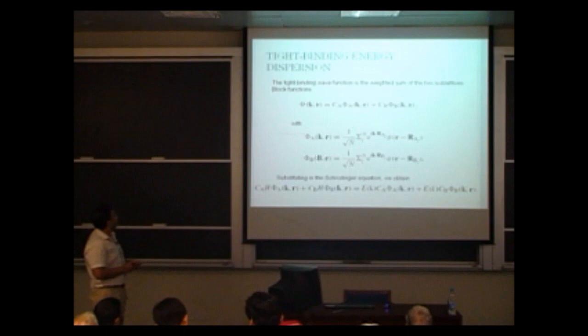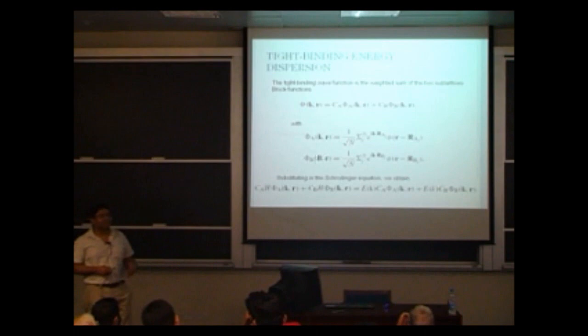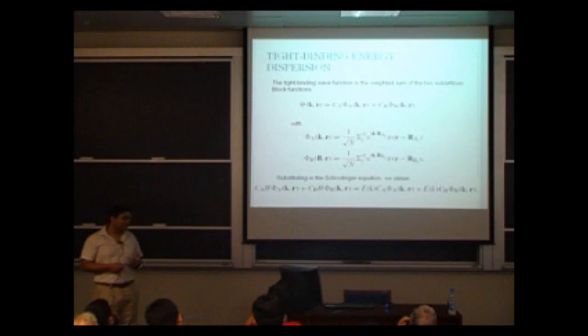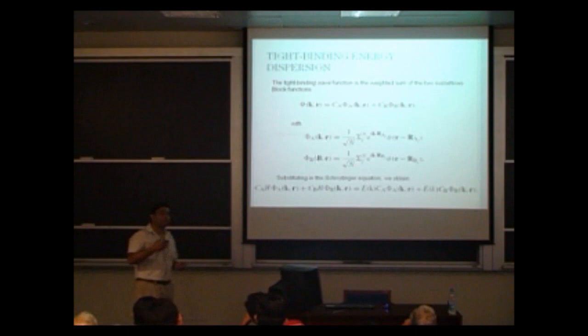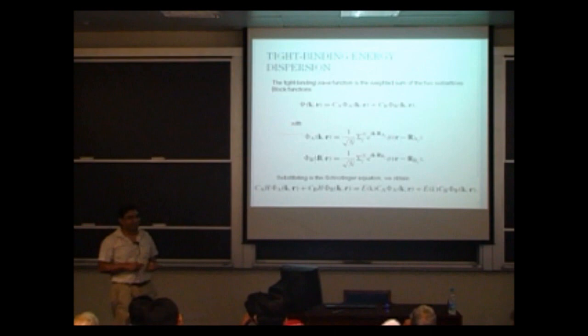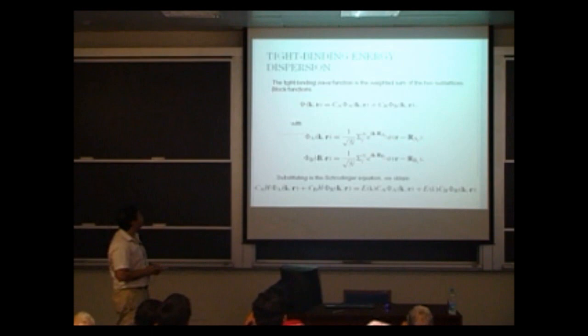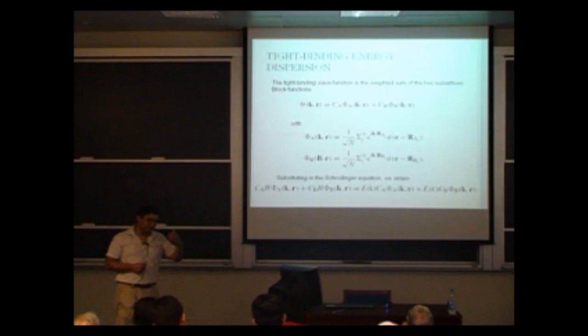Now we are going to do a tight binding calculation, as mentioned earlier. Tight binding was very successfully used to determine the energy dispersion relation in diamond, for example. On those grounds, people also did a tight binding calculation on graphene — actually it was done earlier for graphite, but results were built up on the basis of a single layer of graphene. The tight binding calculation considers the electrons as more or less localized at the atomic sites, with a small but finite probability for the electrons to hop.